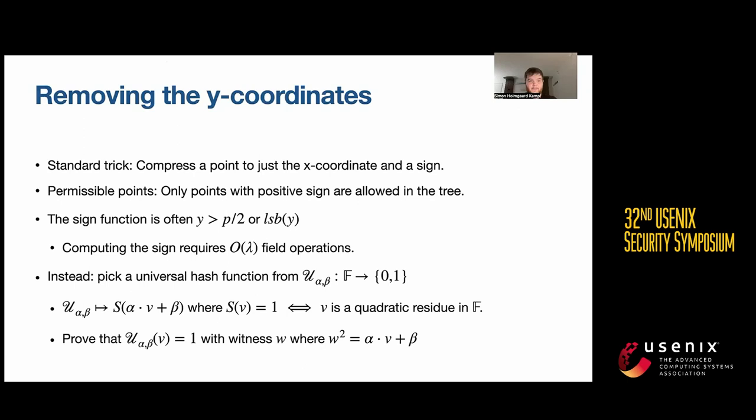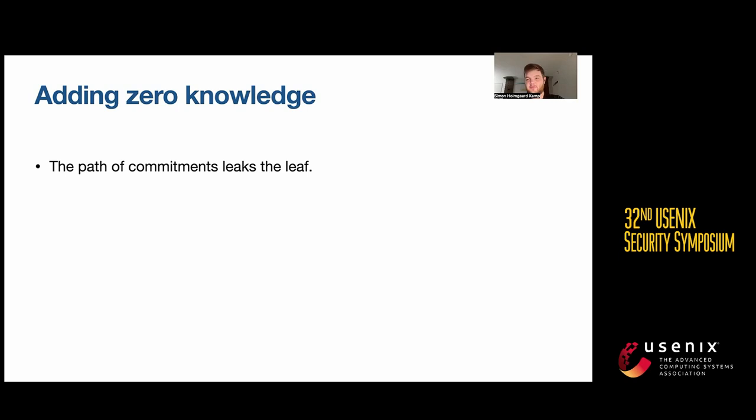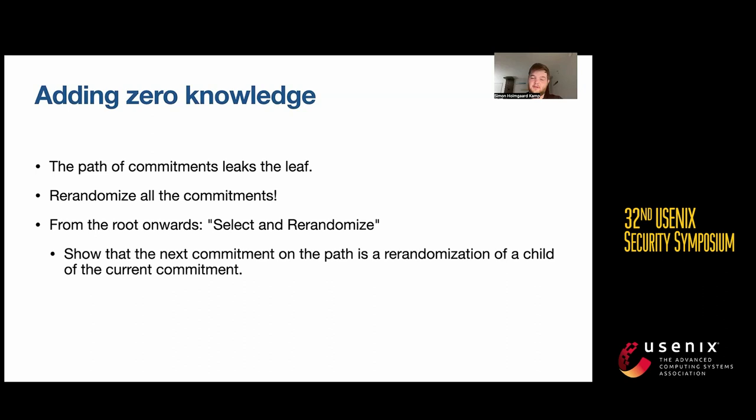Now we left this open problem of adding zero knowledge, because the path given to the verifier was simply going to reveal what the leaf was. Our solution is to re-randomize all of those commitments on the path. Then from the root onwards, we show this relation.